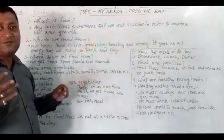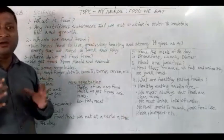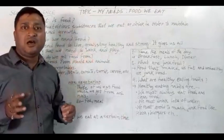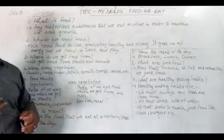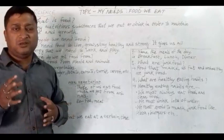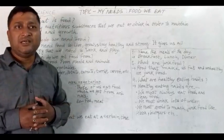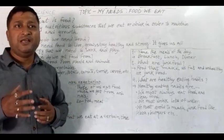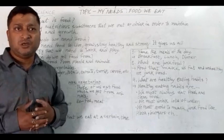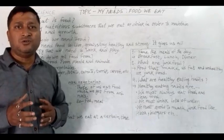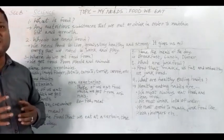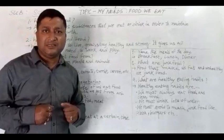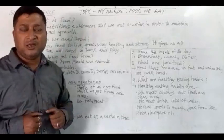Now I shall explain this chapter. The food we eat — we get from plants and animals. Every living being on this earth needs food. Food is the nutritious substance that we need to keep our life steady, maintain our life and growth.